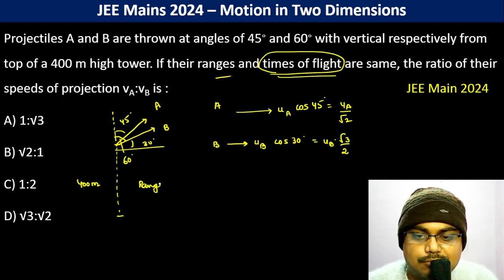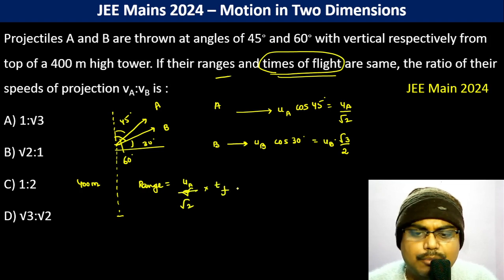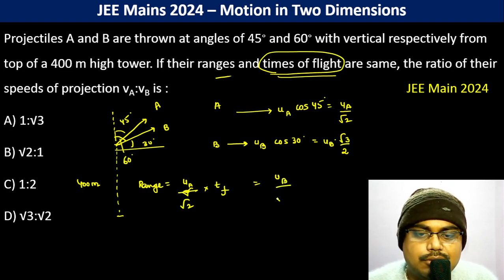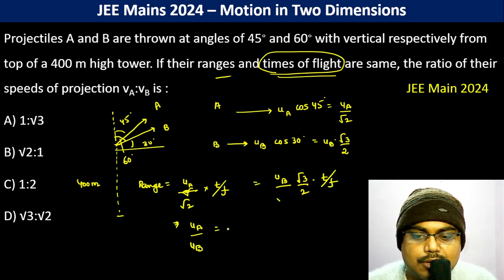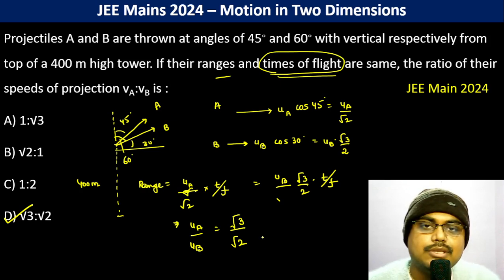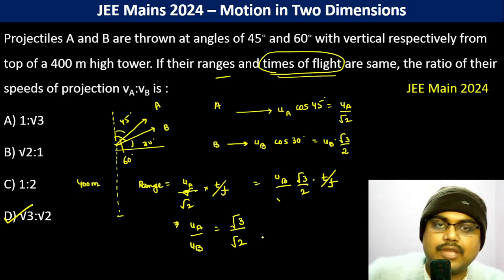Since the time of flight is the same, the range for A is (uA/√2)·T and for B is (uB·√3/2)·T. Since the ranges are also equal, setting these equal and cancelling the time of flight gives uA/uB = √3/√2. So option D is the answer.